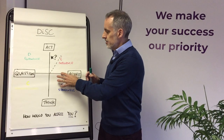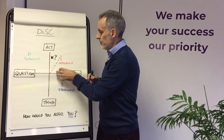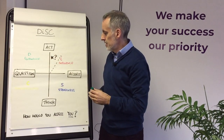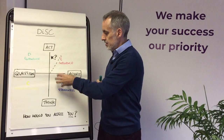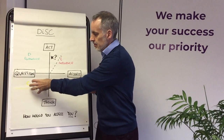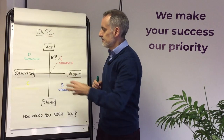If you plot yourself on these two lines, you will fall into one of four quadrants: Influence, Steadiness, Conscientiousness, and Dominance.